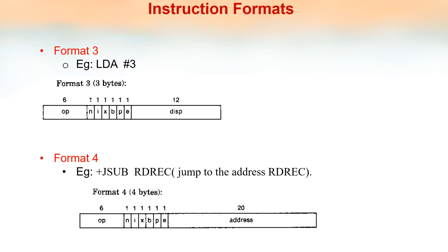Format 3 is a 3-byte format, meaning 24 bits, similar to the SIC instruction. The distribution is: first 6 bits are the opcode, then the next 6 bits represent the flags N, I, X, B, P, E — used in identifying the addressing modes. The remaining 12 bits represent the displacement or the operand of that instruction. Total: 24 bits.